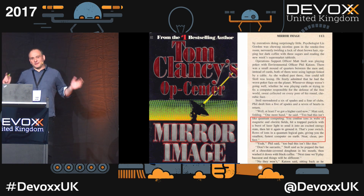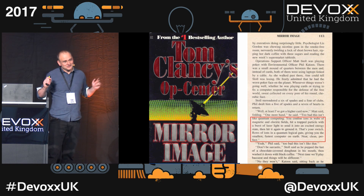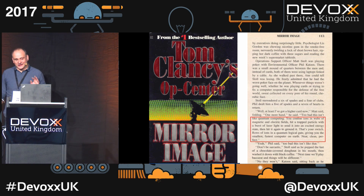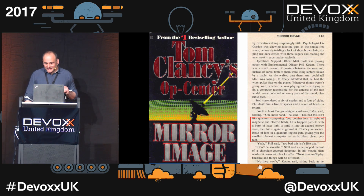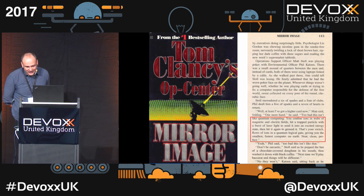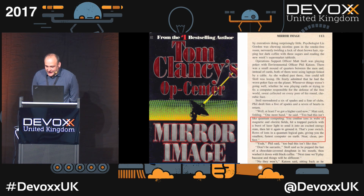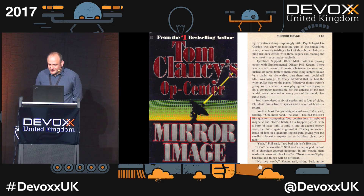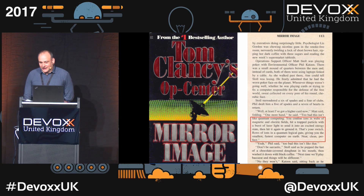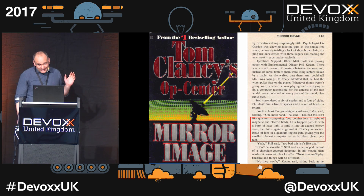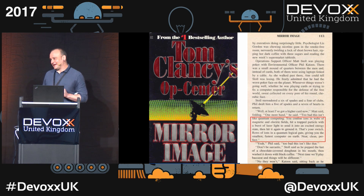If you want to learn about physics, the best place to start is obviously Tom Clancy. He actually got it right in his famous book Mirror Image, where he explains quantum computing: 'You confine ions in webs of magnetic and electric fields, hit a trapped particle with a burst of laser light to send it into an excited energy state, then hit it again to ground it. That's your switch. Rows of ions in a quantum logical gate, giving you the smallest, fastest computer on earth. Neat, clean and perfect.' Now Tom Clancy is absolutely right — besides the last sentence. It is definitely not neat and clean, as you will see when I show you some pictures.